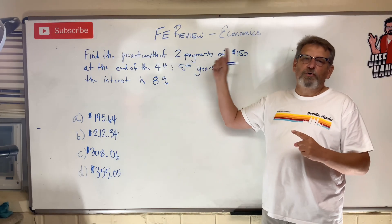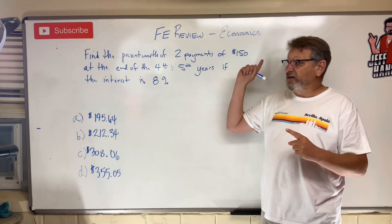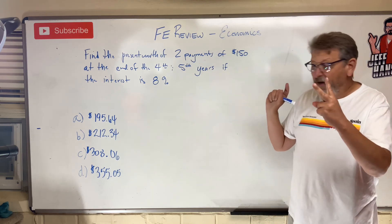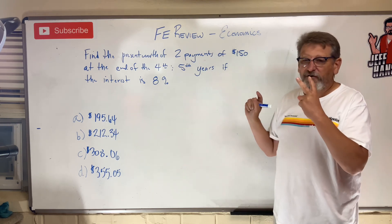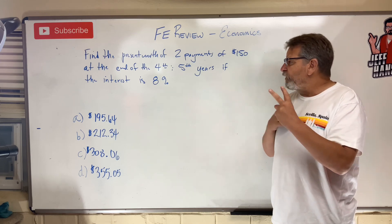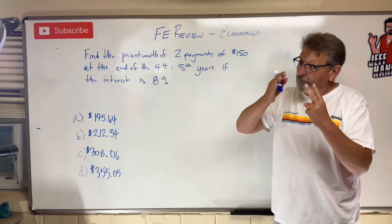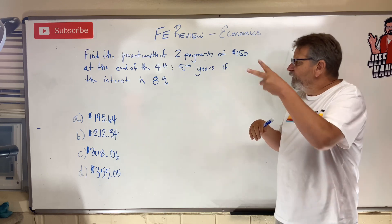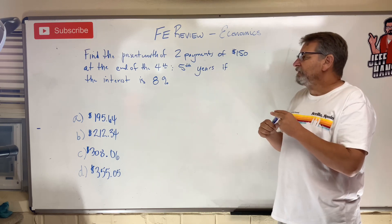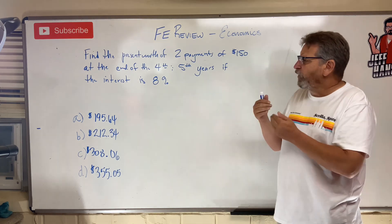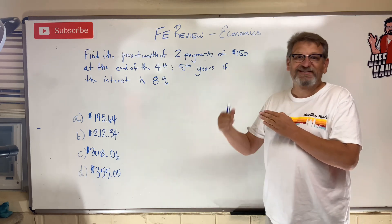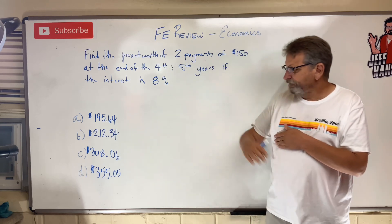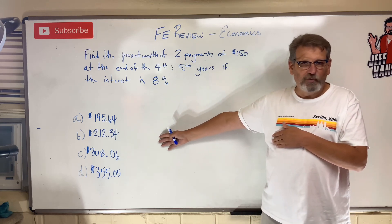FE review economics problem: find the present worth of two payments of $150 at the end of the fourth and fifth years. There are no payments at years one, two, or three — only at the end of year four and the end of year five. If the interest is 8%, what is today's value? Here are your answer choices — press pause and give it a go.